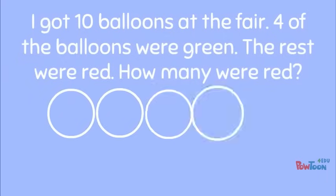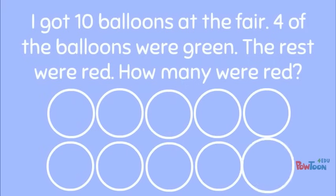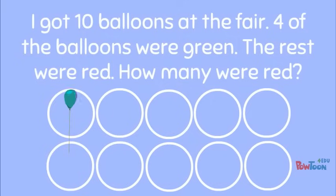I'm going to draw 10 circles to represent the 10 that I know I have in all. Now I know that 4 were green, so I'm going to draw 4 green balloons. The rest were red, so I'm going to fill in the rest with red balloons.